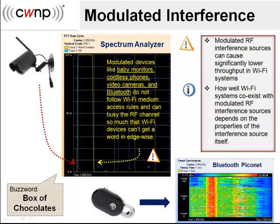The trick with modulated interference is that there are so many different kinds, you just never really know what you might get. A spectrum analyzer, which measures RF energy in radio frequencies, is a tool that allows us to measure interference and determine its impact on our wireless networks.